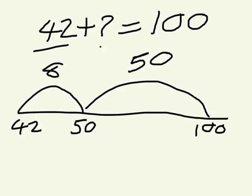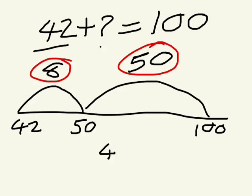Then we need to add these two together. So 50 add 8 is 58. So our answer is 42 add 58 equals 100.